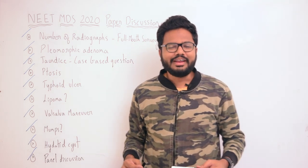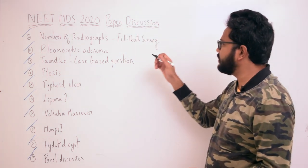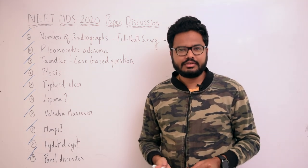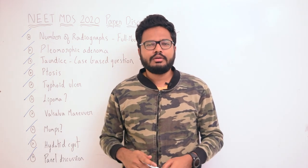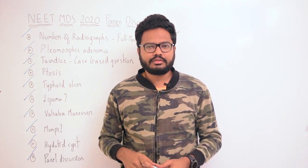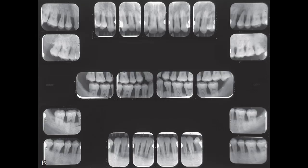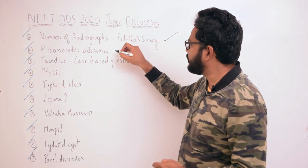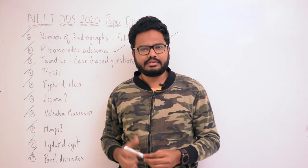In this video, let's discuss the following topics. Starting with the number of radiographs in a full mouth survey: we have 17 IOPs and 4 bitewings, so the total is 17 plus 4, which equals 21.